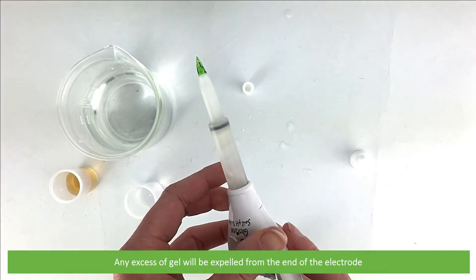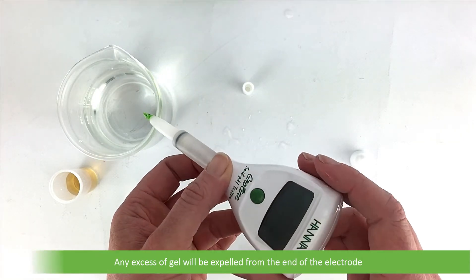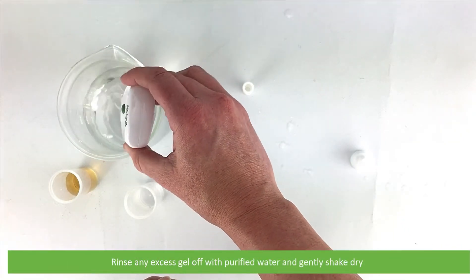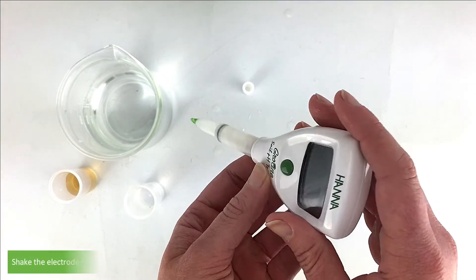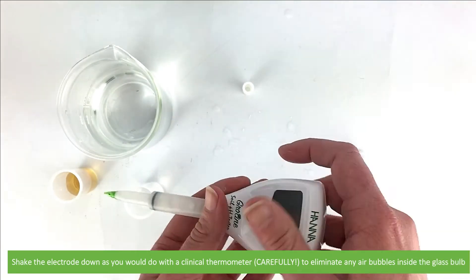Any excess gel will be expelled through the end of the electrode. Rinse off any excess gel with purified water, then gently shake dry. Shake the electrode down as you would with a clinical thermometer to eliminate any air bubbles inside the glass bulb.